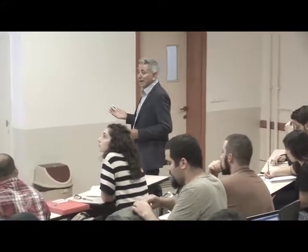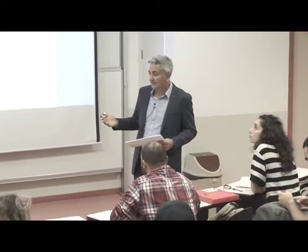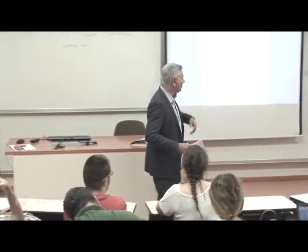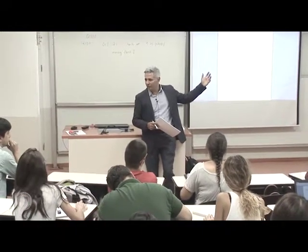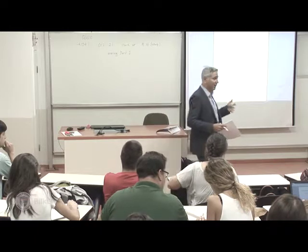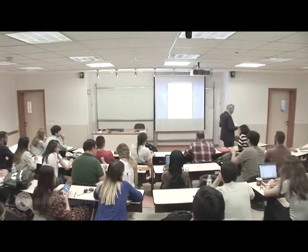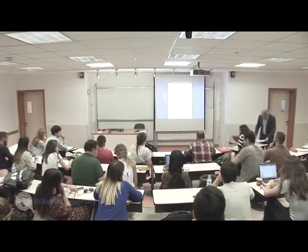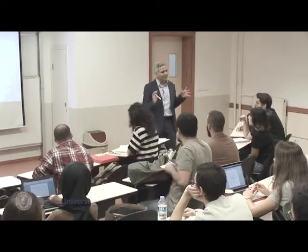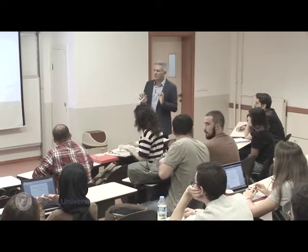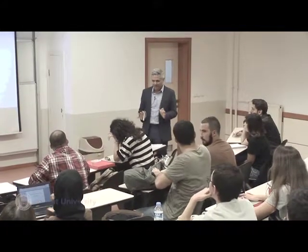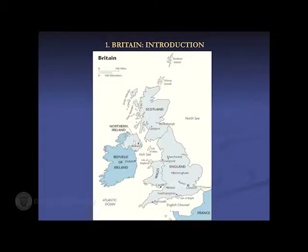Some geographers see Europe as a peninsula of Asia; others see Europe as a continent of its own. When we talk about Britain, we talk about the United Kingdom of Great Britain — which refers to England, Wales, and Scotland. When we include Northern Ireland, we refer to the United Kingdom of Great Britain and Northern Ireland.